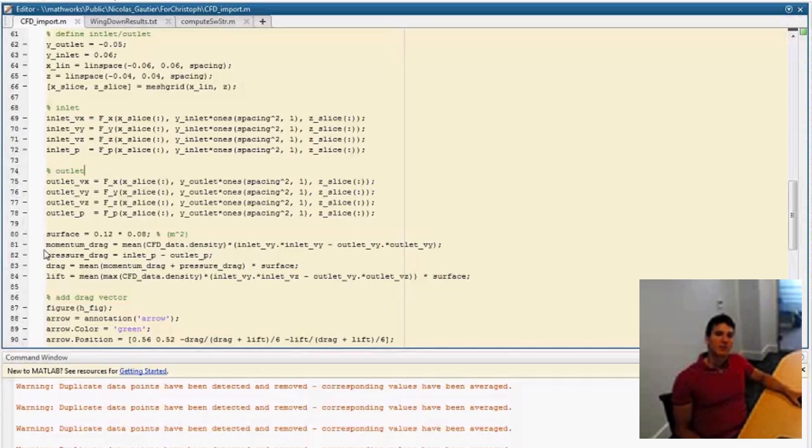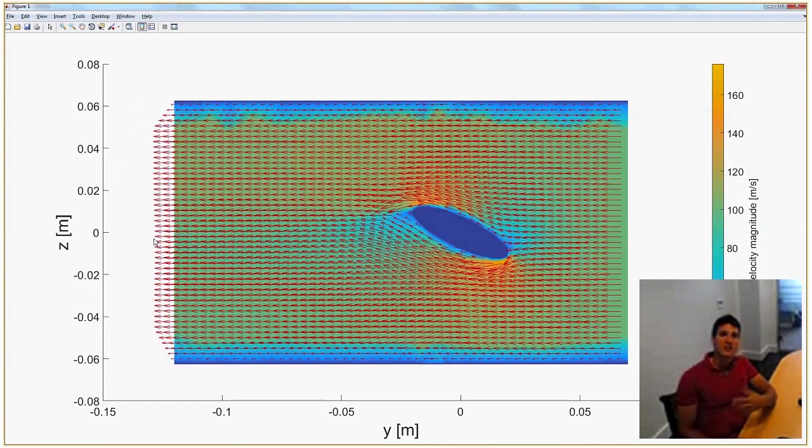Then we just compute the momentum drag. Of course we will need the density, but here density is constant, we just get the one value. But if they weren't constant it would be very easy to accommodate. Then we get the momentum coming in minus the momentum coming out, then also do a pressure differential. Add these two together, multiply by the surface which gives us the drag. Then we can do the same for lift. Now we have these values, we can actually display them in a way that's easy to visualize. Let me just run this code right here. What this will do is compute the drag and it's going to add an arrow to our previous plot showing the direction and scale of the drag.